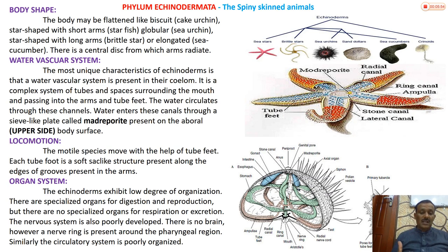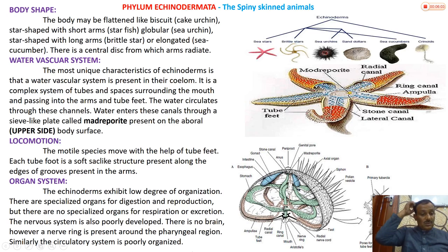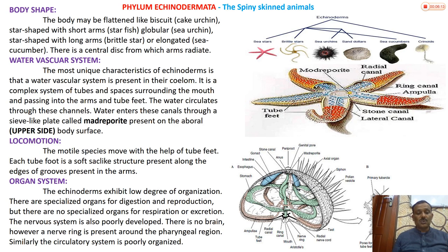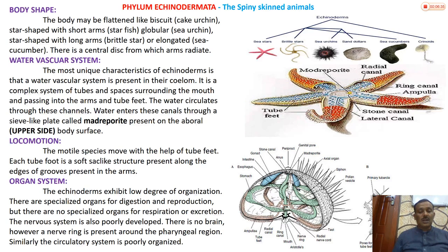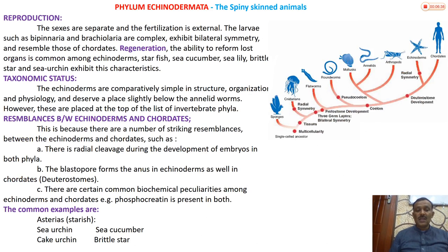Echinoderms exhibit a low degree of organ organization - their body organs are not highly developed. There are specialized organs for digestion and reproduction, but there is no specialized organ for respiration or excretion. The nervous system is also not fully developed. There is no brain; however, a nerve ring is present. A nerve ring visible in figures acts as a brain equivalent, with nerve fibers spreading throughout the body. The circulatory system is also poorly organized, though the water vascular system is present.